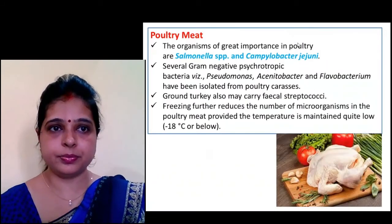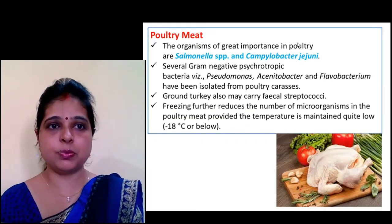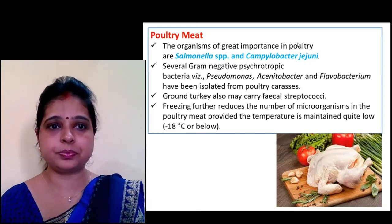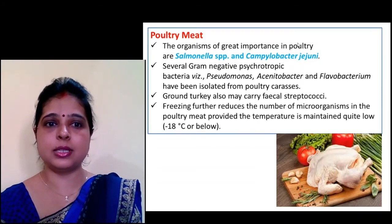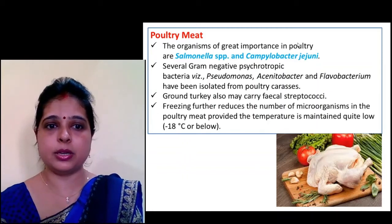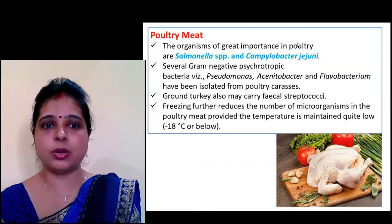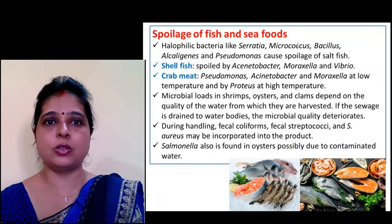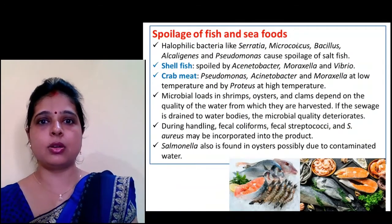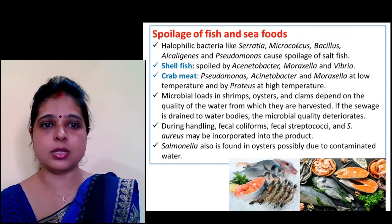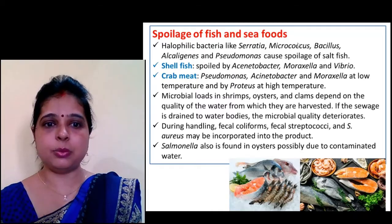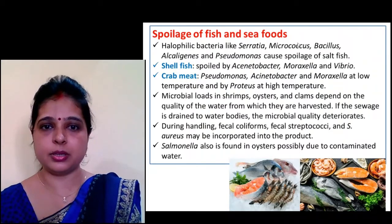For poultry meat, the main causes of spoilage are Salmonella and Campylobacter. Poultry meat stored at temperatures below -18°C can maintain its quality for a long period. For fish and seafoods, microorganisms such as Serratia, Micrococcus, and Bacillus play an important role in spoilage, and Salmonella is also found in oysters due to contaminated water.